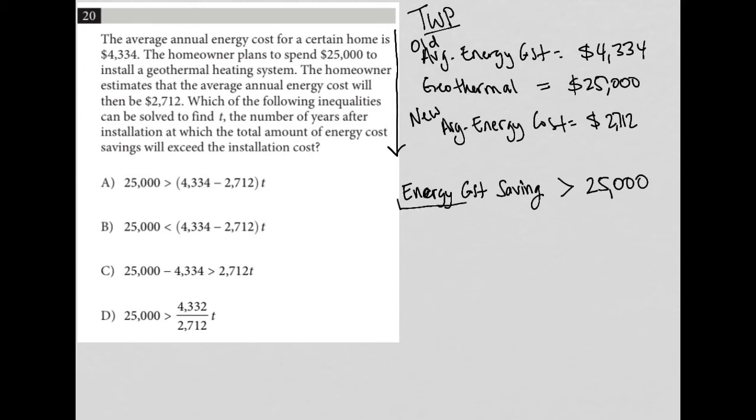So how do we find the energy cost savings? Well, the old cost was $4,334. The new cost is $2,712 and that's per year, right? So the savings is how much are you saving by only paying $2,712 instead of $4,334. Well, that's just the difference of the two, right? So $4,334 minus $2,712.